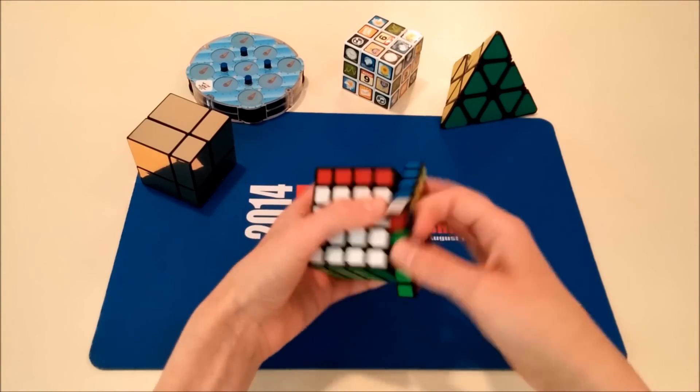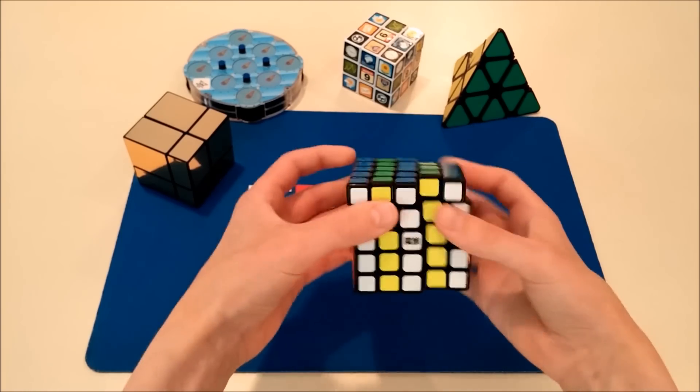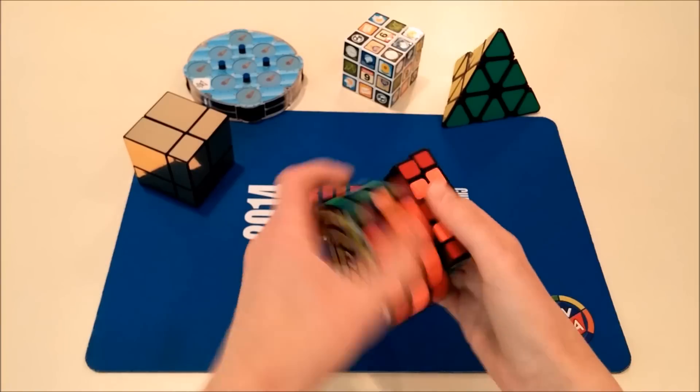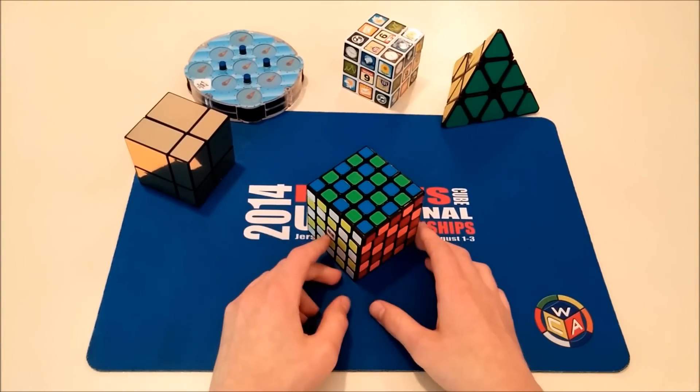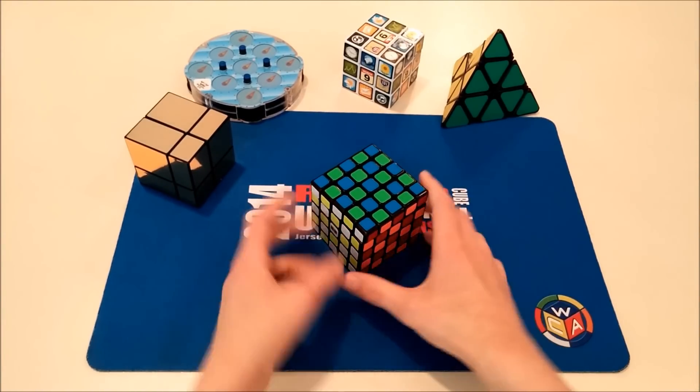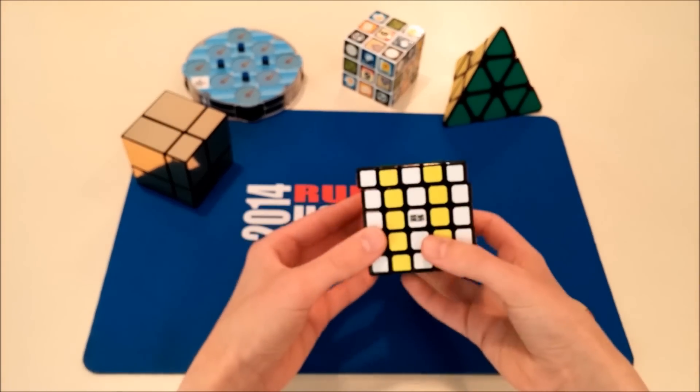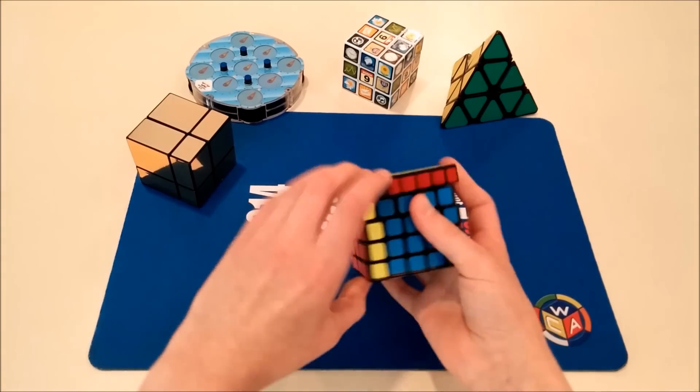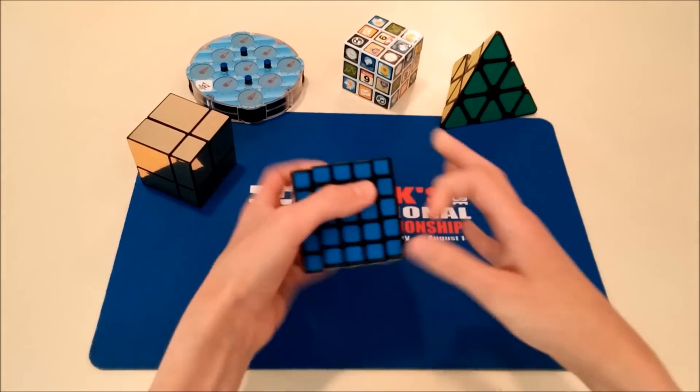Next is the Moyu Hua Chuang 5x5, because I had a Moyu Ao Chuang, except at Doylestown I lost it. I'm convinced somebody must have taken it from me, unfortunately. Because I know I brought it with me, but I didn't take it out of my backpack once. And then when I was checking to make sure I had all my cubes at the end of the competition, it wasn't there. But at least it was an excuse for me to get a better 5x5, which is the Hua Chuang. And it's actually really nice, and I like it.